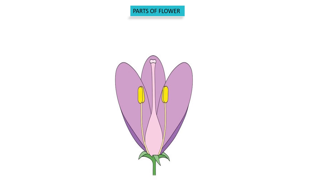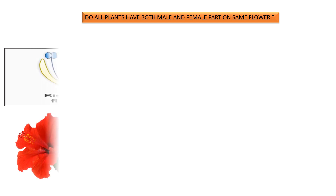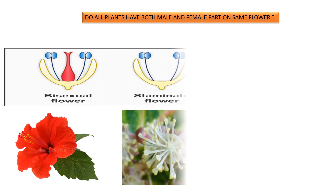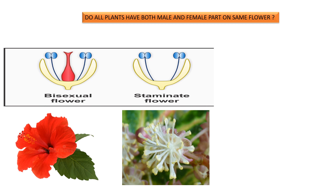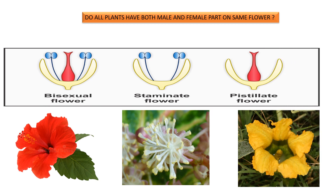Do all flowers have both male and female parts? Not at all. Some flowers have both male as well as female parts — they are called bisexual flowers. Some flowers have only the male part and they are called staminate flowers. Some flowers have only the female part and that is called the pistillate flower.